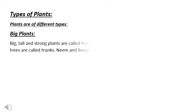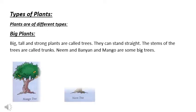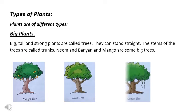Now, we are going to discuss about types of plants. Plants are of different types. Big plants — big, tall and strong plants are called trees. They can stand straight. The stems of the trees are called trunks. Neem, banyan, and mango are some big trees.